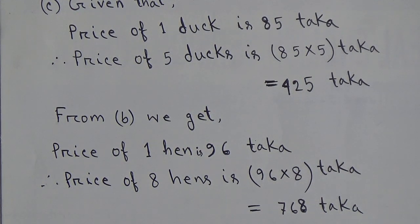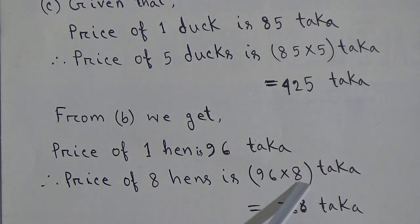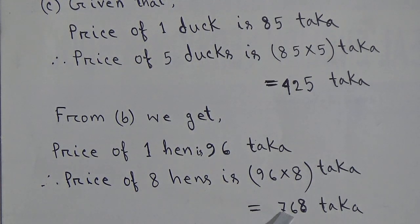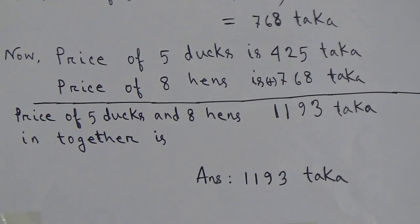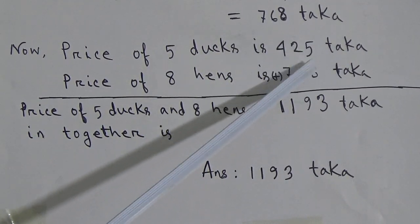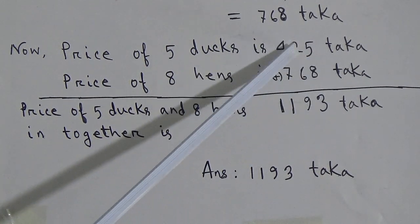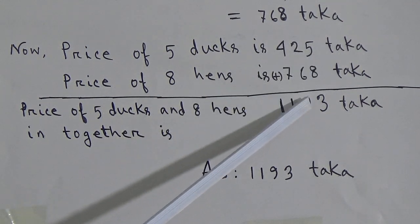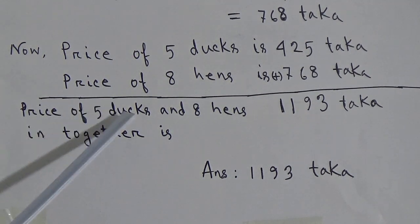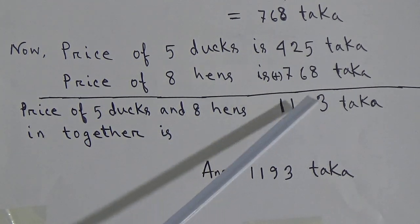From part B, we get the price of 1 hen is TK96. Therefore, the price of 8 hens is 8 times 96. 8 sixes are 48 — write 8, carry 4. 8 nines are 72, plus 4 is 76. That means the price of 8 hens is TK768. Now the price of 5 ducks is TK425 and price of 8 hens is TK768. We add these two: 5 plus 8 is 13 — write 3, carry 1. 1 plus 2 plus 6 is 9. And 4 plus 7 is 11. That means the price of 5 ducks and 8 hens together is TK1193.